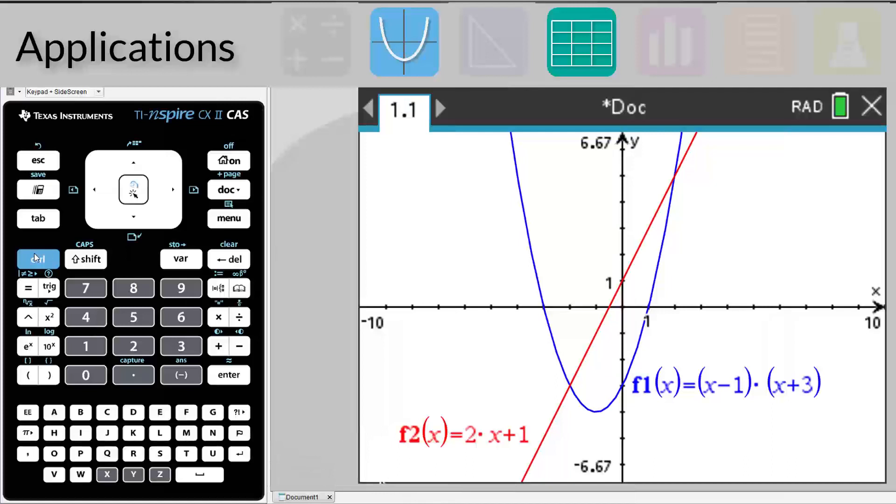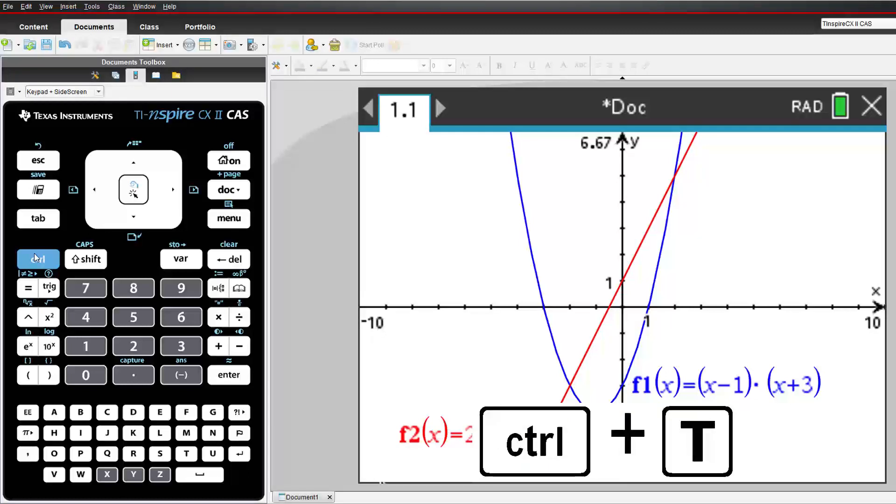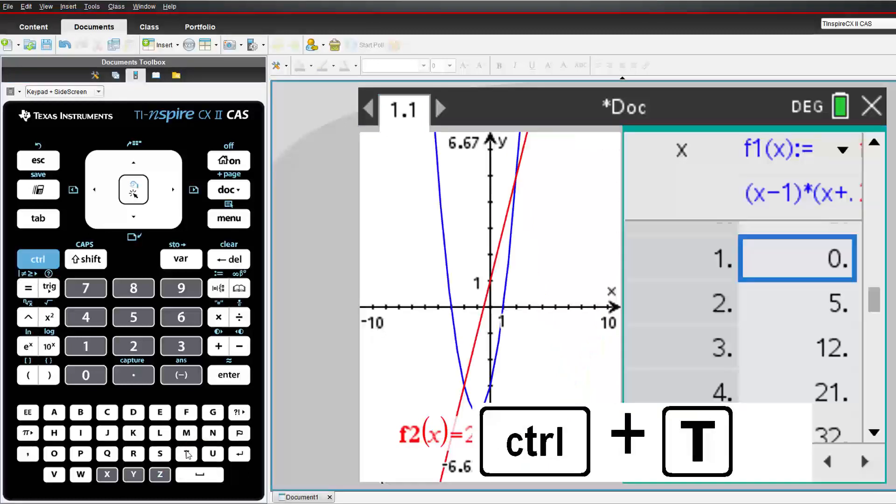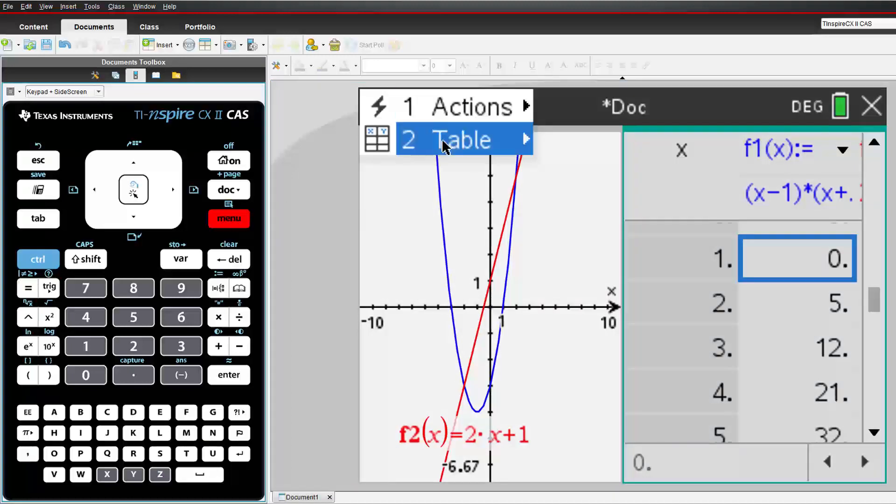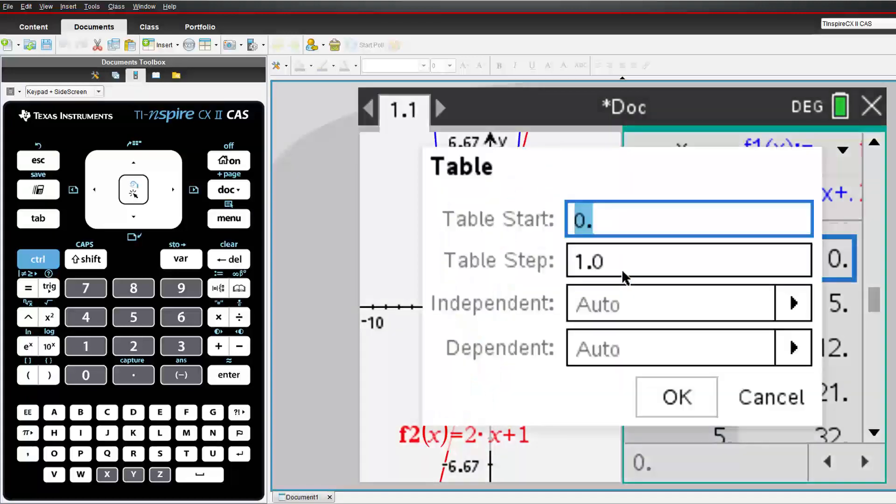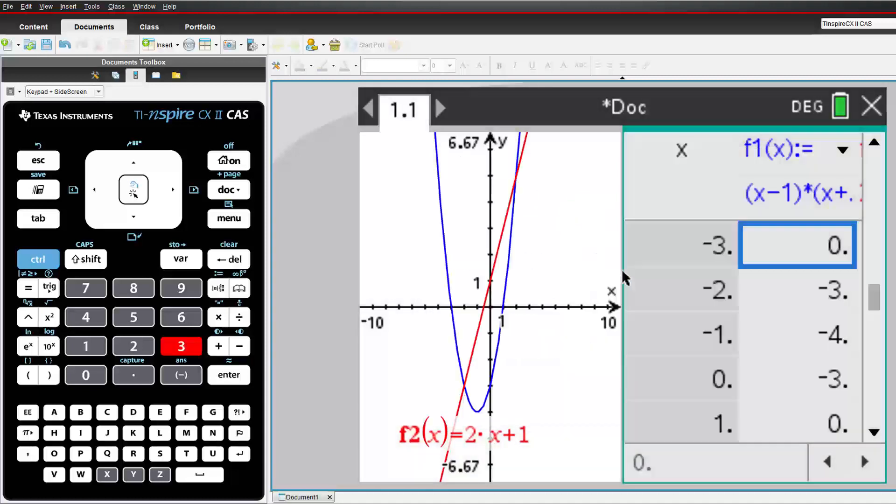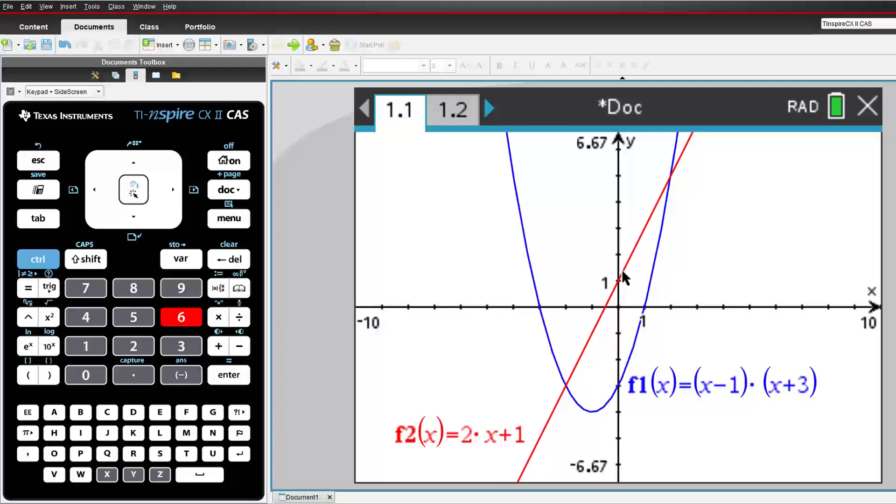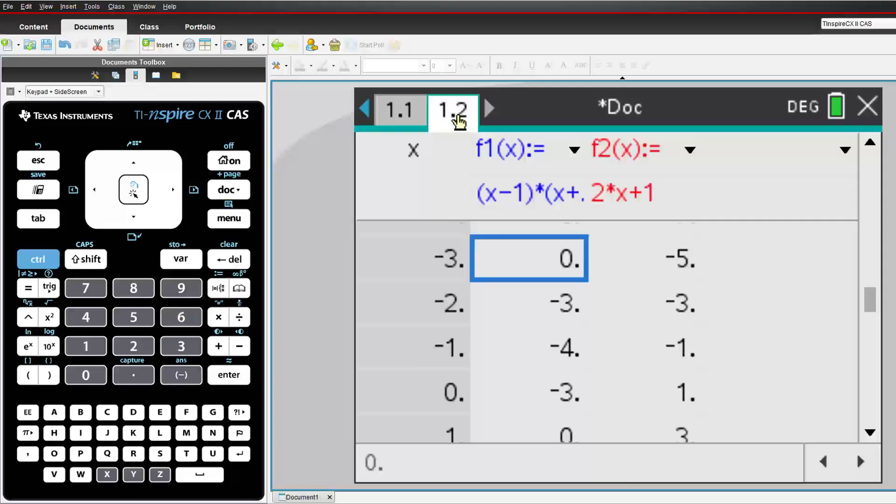Suppose you've just graphed an equation or equations and you want to see a table of values. Press CTRL and T to switch the table on. You can change the start value, step value or even decide whether or not the calculator prompts or generates them automatically. In this case, I've got two functions. The table is not quite wide enough to see the second. I could change the column width or I could use my previous shortcut to ungroup and place the table on a separate page. When I'm done, I could regroup or press CTRL and T to toggle the table back off.